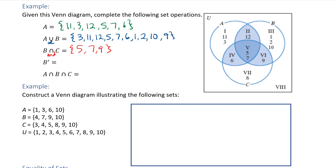The next one is B complement, which means everything that is not inside the B circle. I list everything I can see outside that circle: 11, 3, 6, and 8. There are no elements in region 8, but if there were I would include those as well.